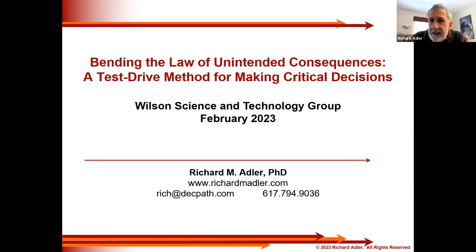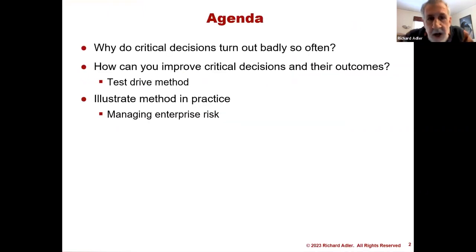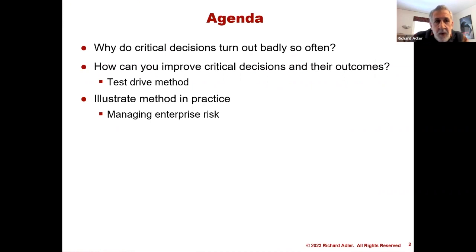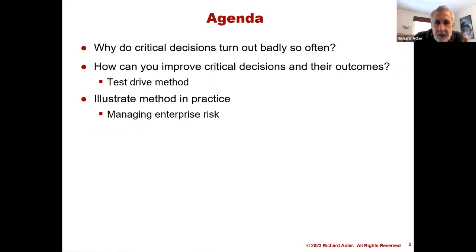In 2020, I published a book entitled Bending the Law of Unintended Consequence. This presentation provides an overview of the book's central themes. My talk will address three topics. First, what are critical decisions, and why do they go awry so frequently? Second, how can you improve critical decisions and their outcomes? I call my answer the decision test drive method. Third, I'll illustrate the test drive method with a case study focused on decisions about managing risk. You can think of these three segments as diagnosis, treatment, and praxis.